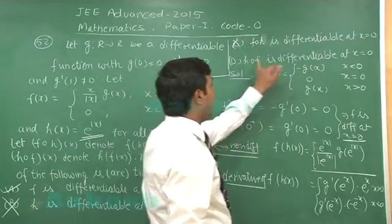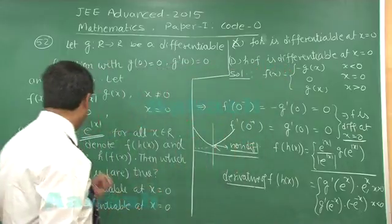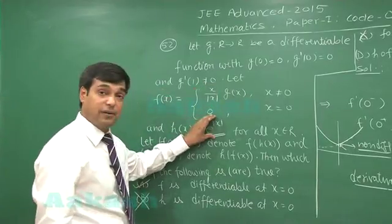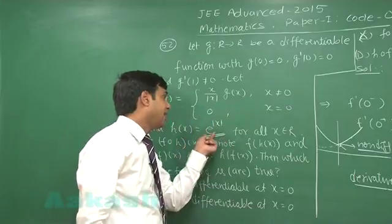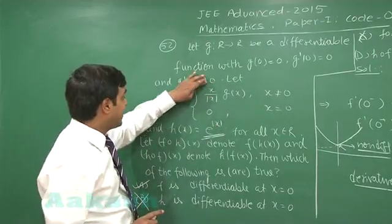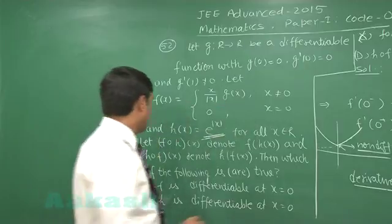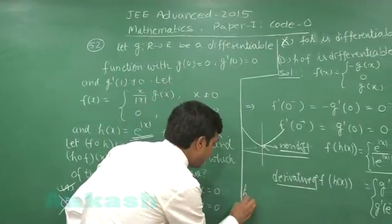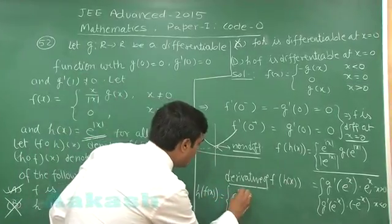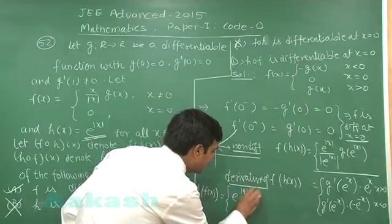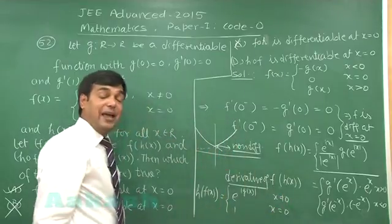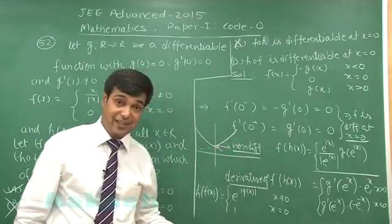Move to option D: h(f(x)). We substitute f(x) into h. When x = 0 it is simply e^0 = 1. When x is non-zero we substitute (x/|x|)·g(x) into the power, so h(f(x)) = e^|g(x)| when x ≠ 0 and 1 when x = 0, because x/|x| gets cancelled by the outer modulus.